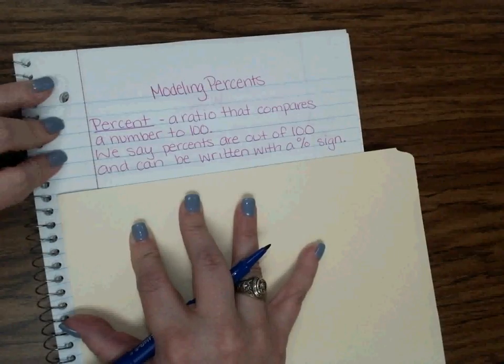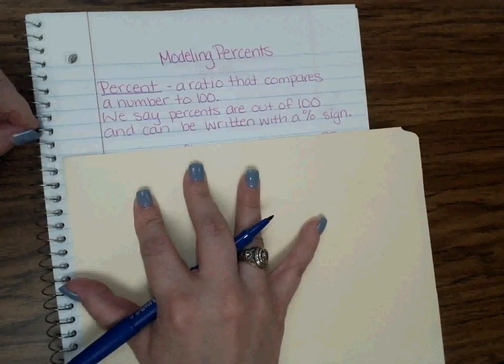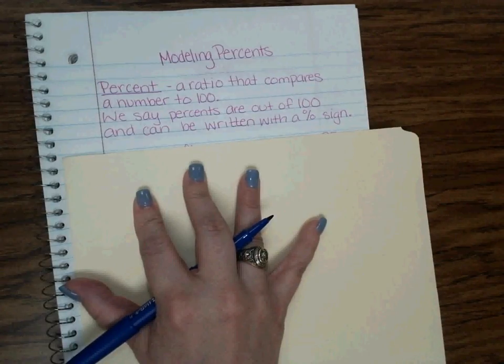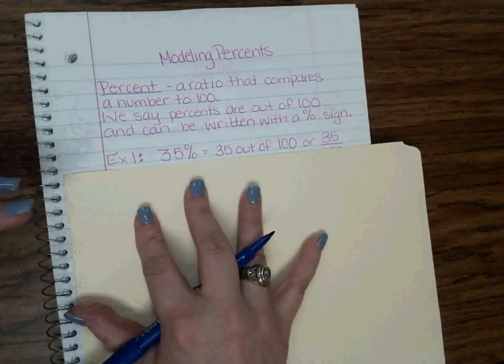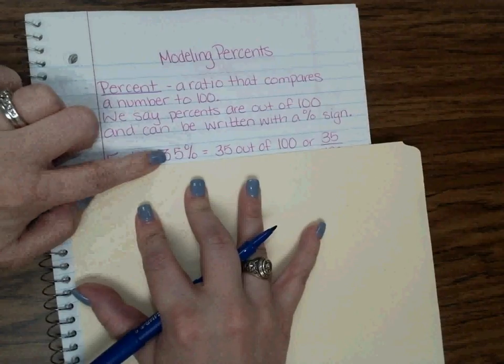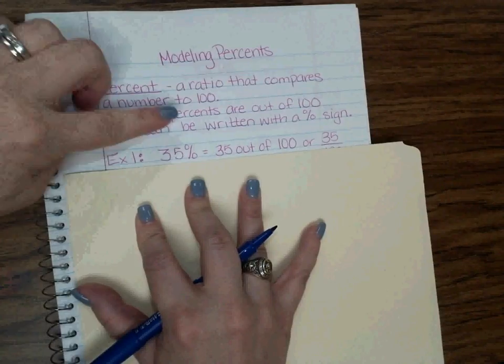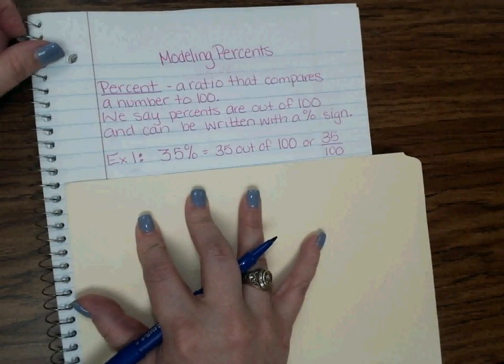There's a number of ways we can model percents and one way that we model percents is using a 10 by 10 grid. Now you've seen these 10 by 10 grids before and we're going to use one to start us off. So our first example is 35%. Make sure that you write this down. 35% which we can say is 35 out of 100 or 35 over 100. So notice it's a fraction.